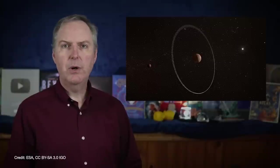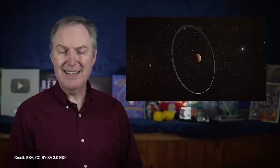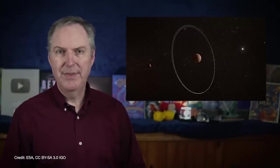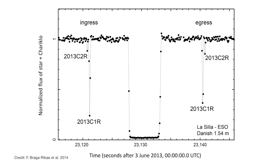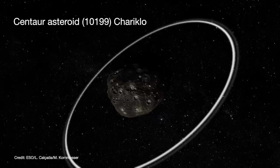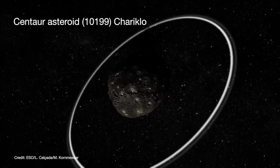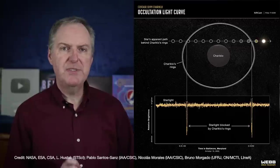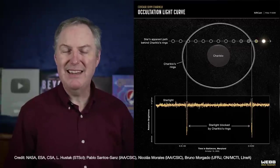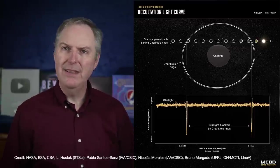That makes Quaoar only the third small solar system body to have a ring discovered around it. The first occurred back in 2013 when the centaur asteroid Chariklo occulted a star. The light curve showed that there were actually two dips both occurring before and after the main occultation. That means Chariklo actually has two rings, one that's relatively dense and the other much thinner. In 2022, the James Webb Space Telescope detected the rings again in another occultation.